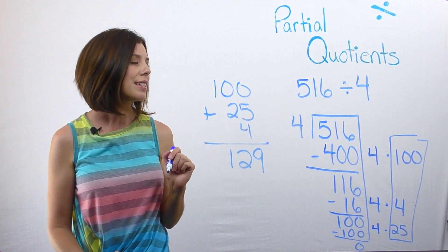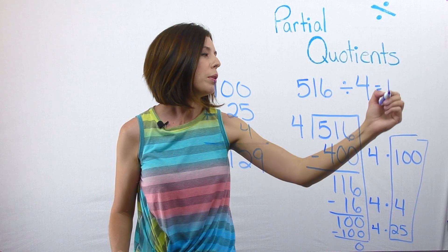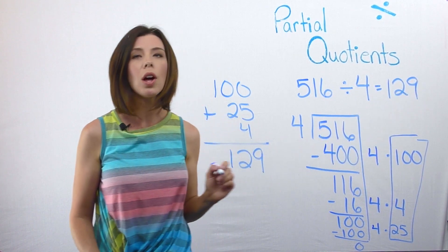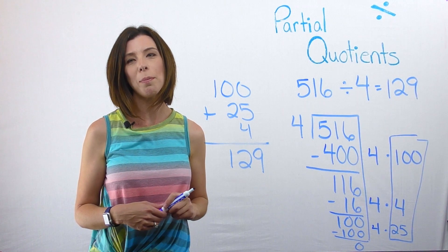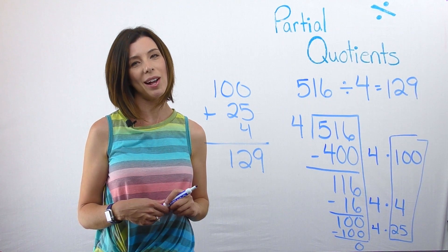So I know that 516 divided by 4, there would be 129 blocks in each pile. I hope that gives you a better way of how to show partial quotients with base 10 blocks. Thanks.